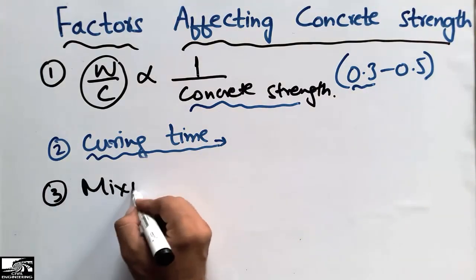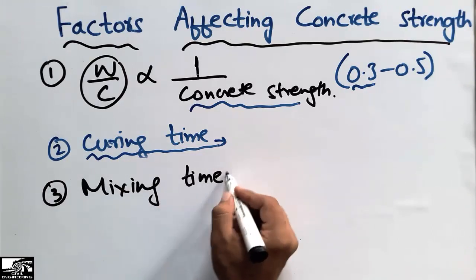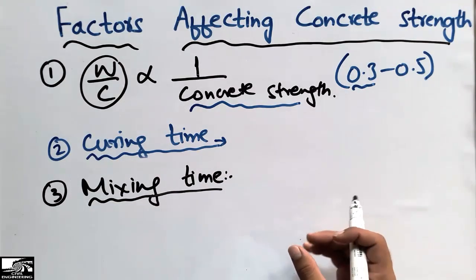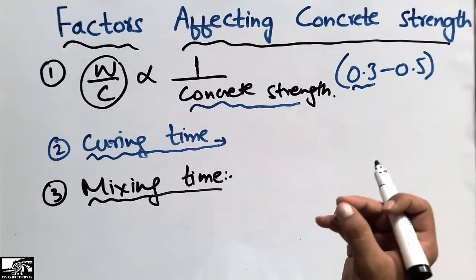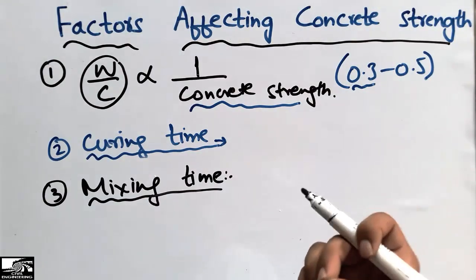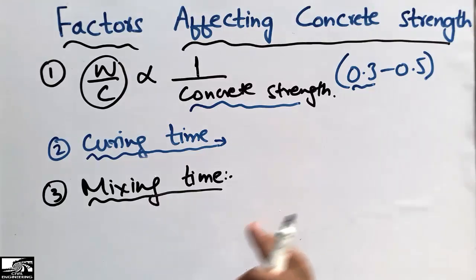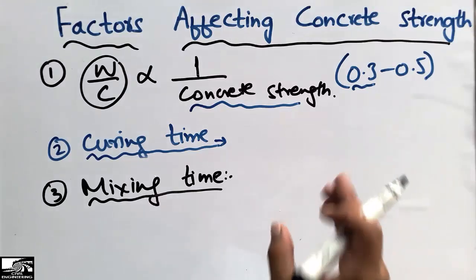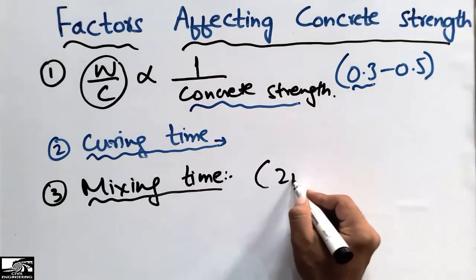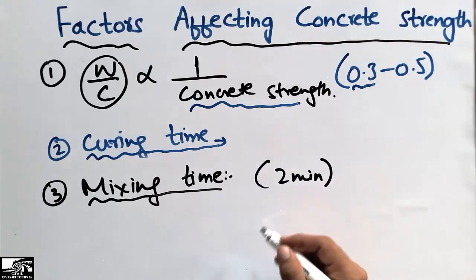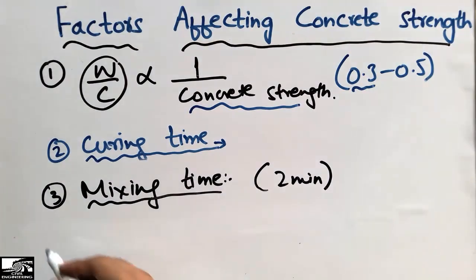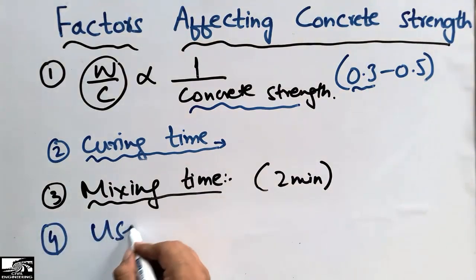For mixing time, we should provide a minimum mixing time for the concrete so that each constituent — the coarse aggregate, fine aggregate, cement, and water — properly mixes with one another and no voids are produced inside the concrete. We should provide a minimum mixing time of two minutes before pouring the concrete into any structural member.